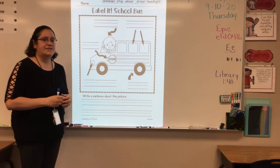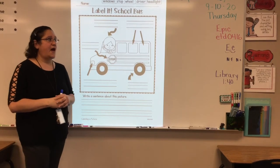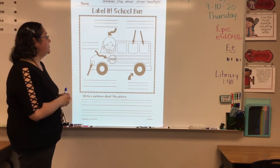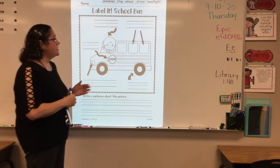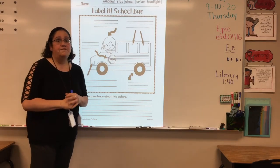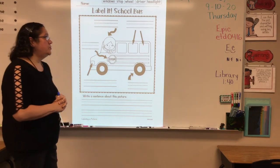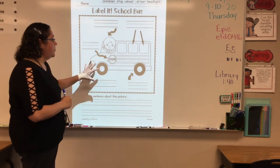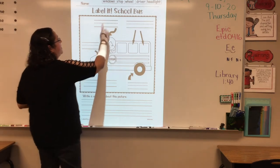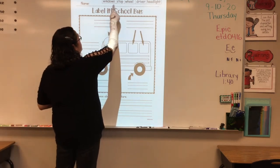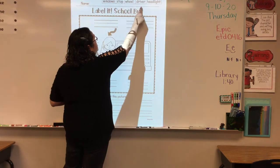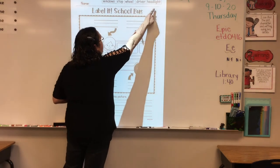I am going to do an example of how you do this worksheet called Label It. This one in particular is called School Bus. The first thing we're going to do is we're going to label the picture. We have the words up here: Windows, Stop, Wheel, Driver, Headlight.